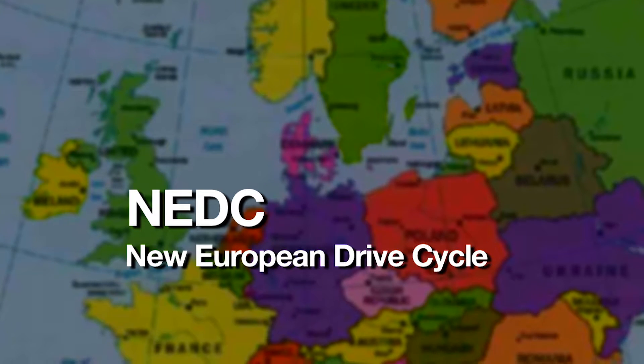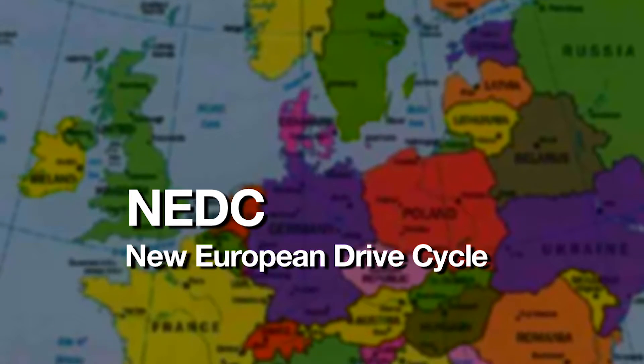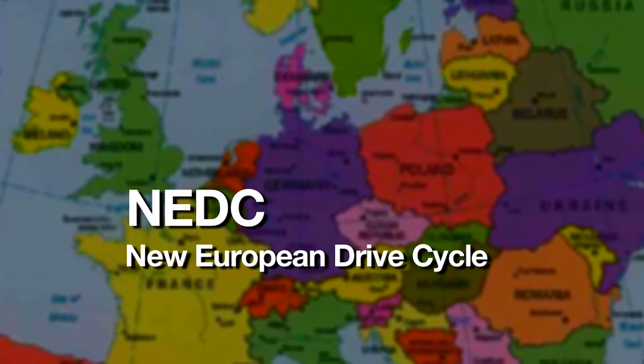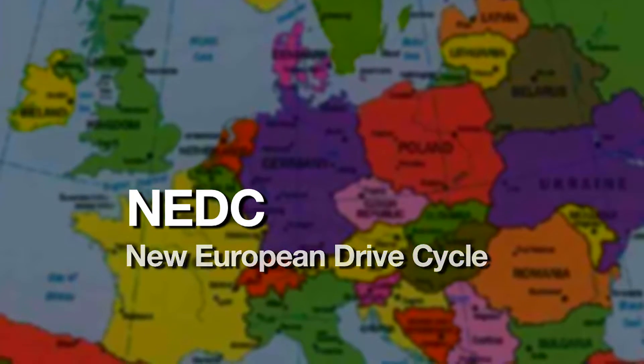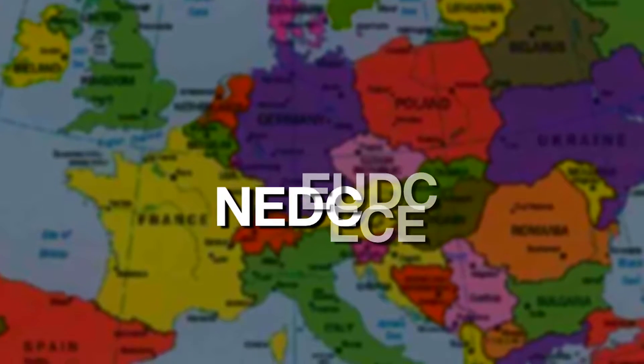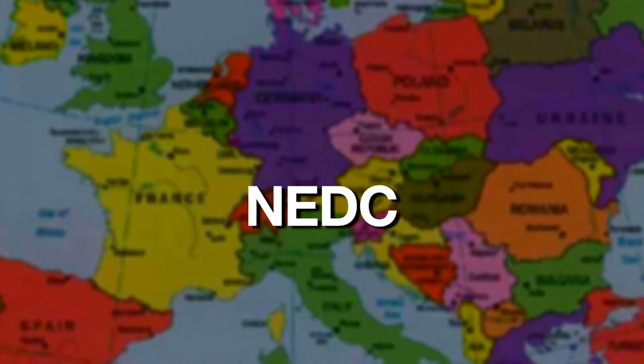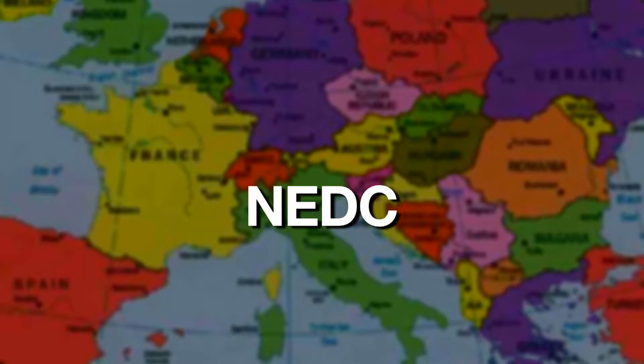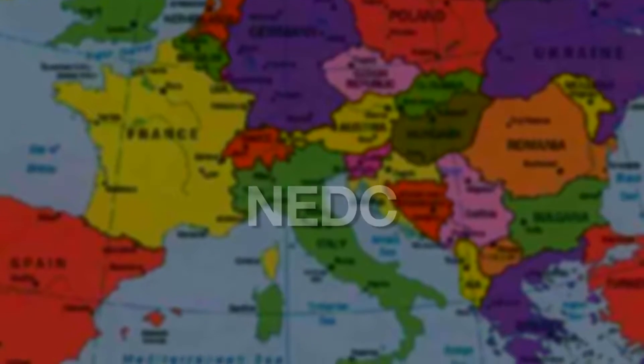In Europe, the primary tool for measuring both fuel economy and CO2 emissions is the New European Drive Cycle, usually referred to as the NEDC. The NEDC represents the combination of the ECE and the EUDC drive cycles. It's comparable to the FTP 75 test used to certify emissions in the U.S.